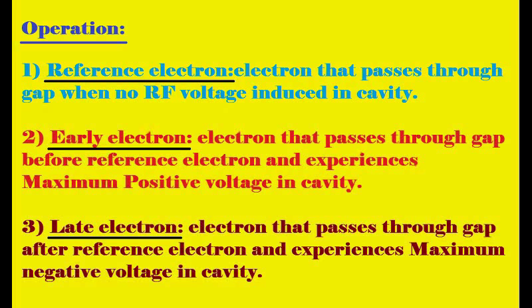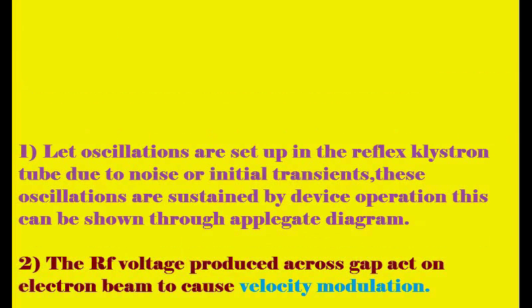We consider one electron as a reference and compare electrons coming before and after it. The reference electron is considered when no RF voltage is applied. The early electron passes the cavity gap before the reference electron, and the late electron passes the cavity gap after the reference electron.